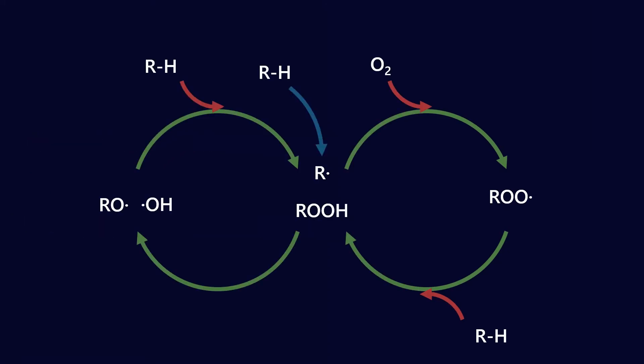All right so as we talked about in a previous video this is the auto-oxidation cycle and we can interrupt the oxidation of a base oil and its additive package by targeting different radical species and neutralizing them.